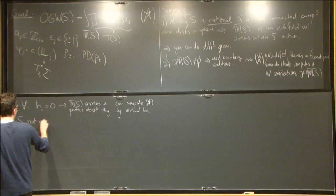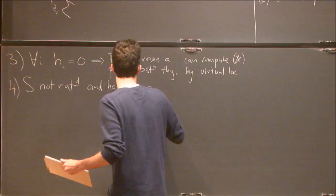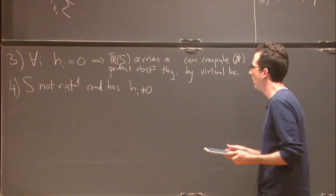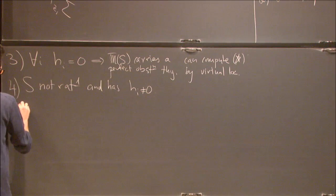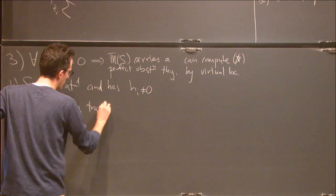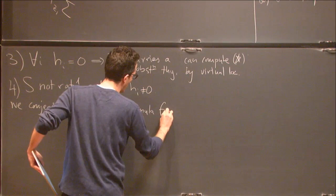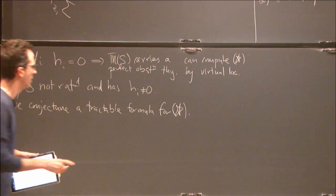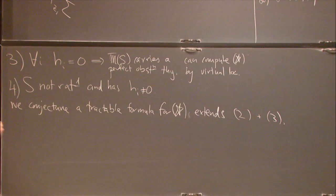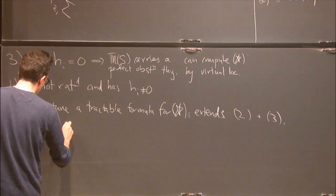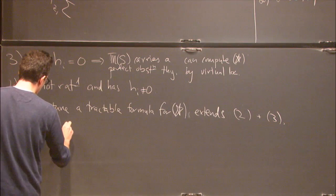The final case, which is the most interesting, is when S is not rational and has some boundary (some h_i not equal to zero). This is notoriously difficult — we need virtual techniques, which we haven't done. What we have done is conjectured an explicitly computable formula for the open GW invariant. This of course extends the cases we already know (cases 2 and 3), but there's more evidence, which I want to spend the rest of this first part outlining.